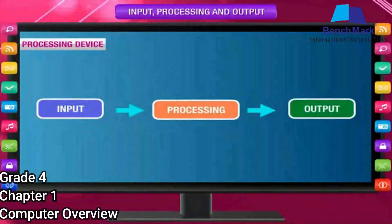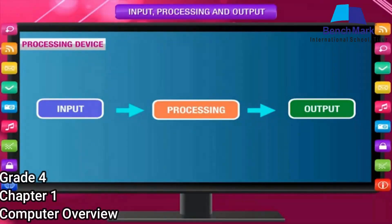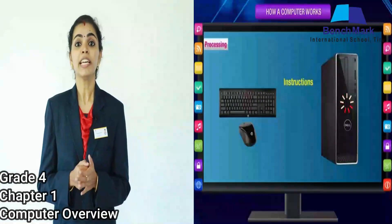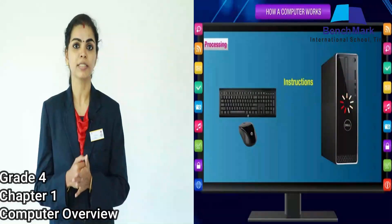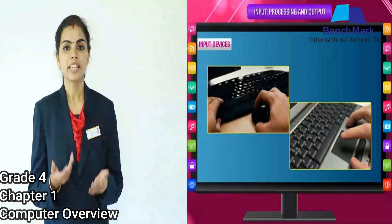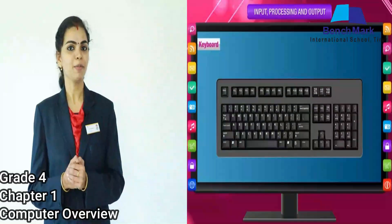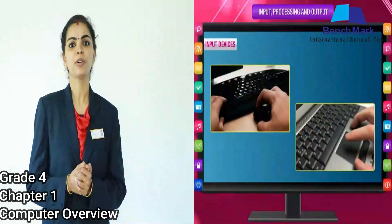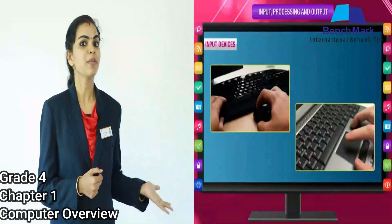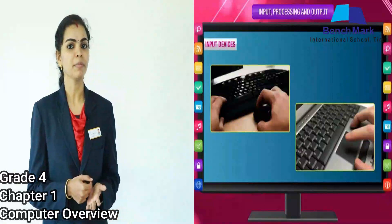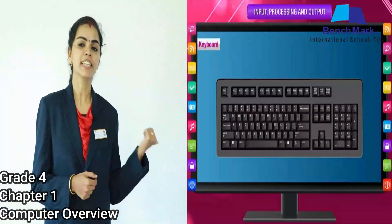Next we'll see how a computer works. A computer works based on the input-process-output cycle. What does this input-process-output cycle mean? The input is the data or instruction that we give to the system, and this input is provided with the help of devices called input devices.